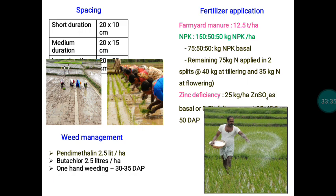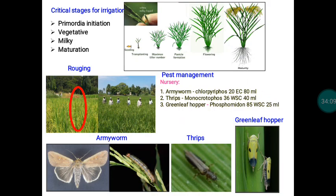Weed management is very important. To control weeds, pendimethalin is applied at 2.5 liters per hectare as a pre-emergence herbicide. Pretilachlor at 2.5 liters per hectare can also be used. These will control weed growth. On the 30th day after planting, one round of manual hand weeding should also be done to control the weed population.